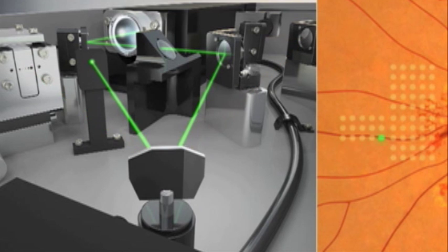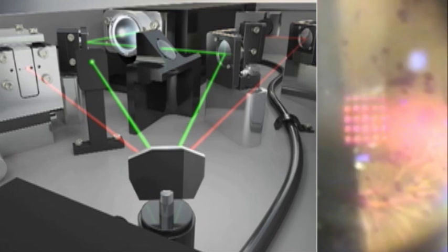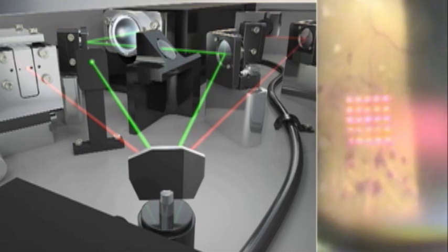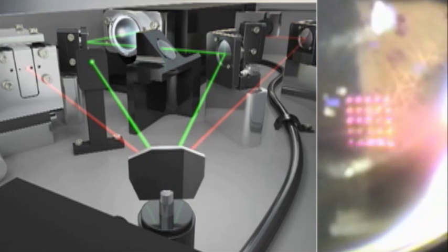PASCAL uses three high-speed computer-driven galvanometers to individually deliver each spot in the pattern, resulting in a 25-spot PRP pattern being delivered in approximately 500 milliseconds.